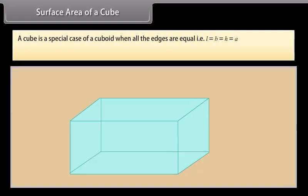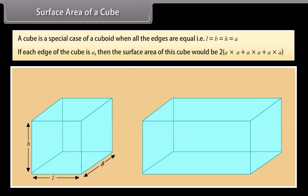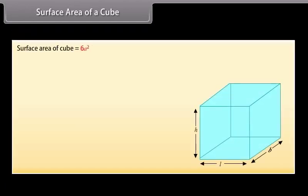A cube is a special case of a cuboid when all the edges are equal, that is L = B = H. If each edge of the cube is A, then the surface area of this cube would be 2(A×A + A×A + A×A), or we can write it as 6A².